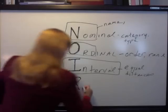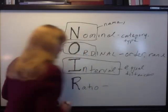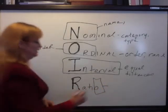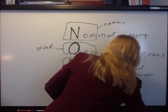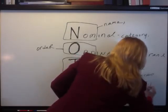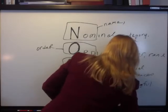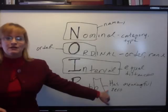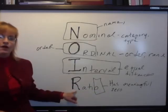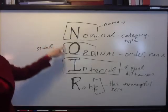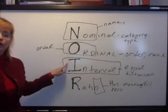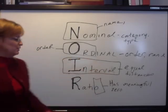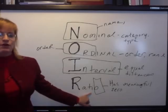And then we have a ratio scale. I think of ratio and I pick out the O and think zero — it has a meaningful zero. For example, how many dollars in a bank account? It could be zero and that would mean something. That would be a ratio scale. A ratio scale not only names and gives order — you know what's higher than what — it also has equal intervals so how far apart things are actually matters and is objectively equal between the numbers. And then there's also an absolute zero on a ratio scale.